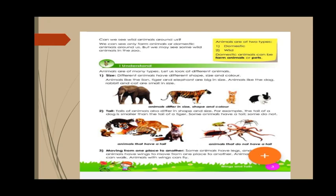Animals like lion, tiger, and elephant are big in size. Animals like dog, rabbit, and cat are small in size. When you compare elephant, tiger, and lion with rabbit, cat, mouse, and other small animals, the size clearly differs. All animals are different in shape and size as well.